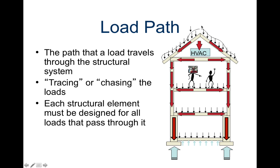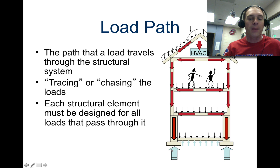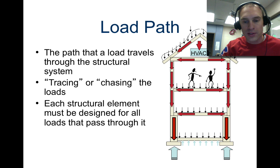This leads into load paths. When you find a load path, it travels through the structural system — you need to trace or chase the load. Each structural element must be designed for all the loads that pass through it. The snow pushing down on the roof pushes outward and then attaches to columns or walls which push down. Lower walls have a combination of forces and must be stronger and stronger, with wider footings to distribute pressure. The upward arrows represent the ground pushing up equal to all downward forces — Newton's third law.